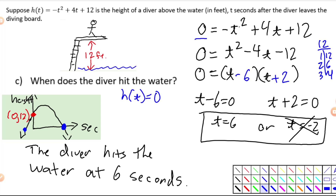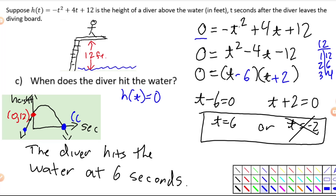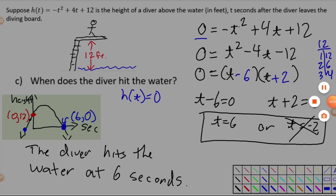Now I can add that to my graph. This point right here is six comma zero — that is the point where the diver hits the water. So we knew the diver started at 12 feet high, and it takes six seconds to hit the water. Not the ground — that would hurt — but the water.